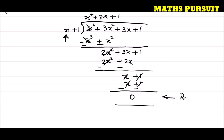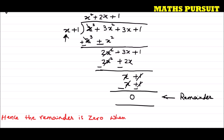This is our remainder. Hence, the remainder is 0 when P(x) is divided by G(x). Write a concluding note in your own words.